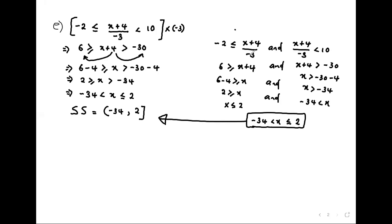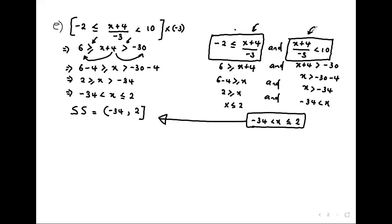Another student asks: after multiplying the negative 3 outside the brackets with everything inside, how did 4 appear twice? The teacher explains: having two inequalities means dealing with two different inequalities. Whatever you do to one, you do to the other. So when you take 4 to the other side, you take it from both sides.